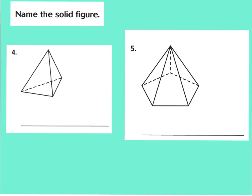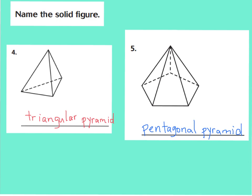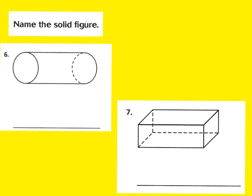Go ahead and write down the names for questions four and five. For number four, you should have said triangular pyramid, because it has a triangle base with triangle faces. For number five, it's a pentagonal pyramid, because you have a pentagonal base with five triangular faces. For number six, it's a cylinder, because it has two congruent circle bases and one curved surface. For number seven, it's a rectangular prism, because it has two congruent rectangle bases and all the side faces are rectangles.